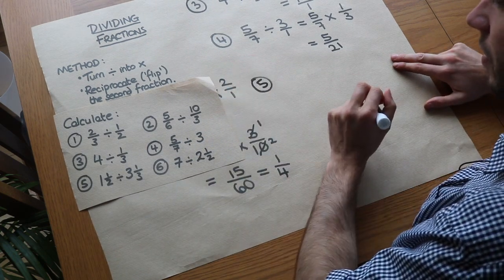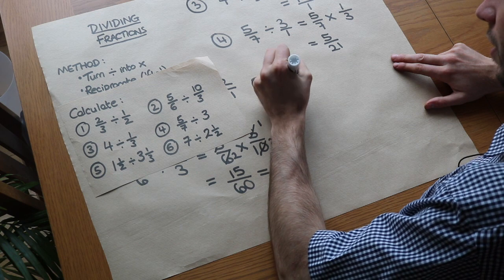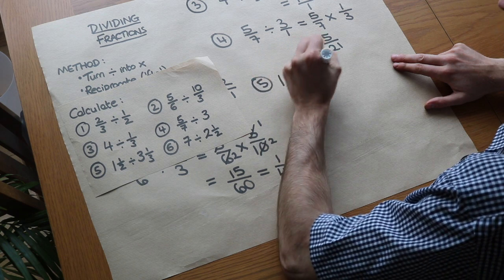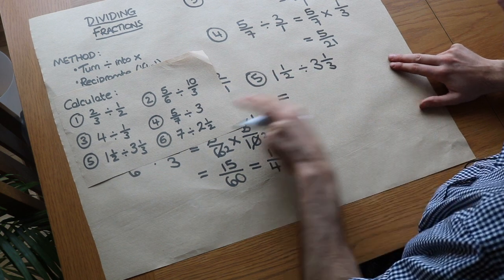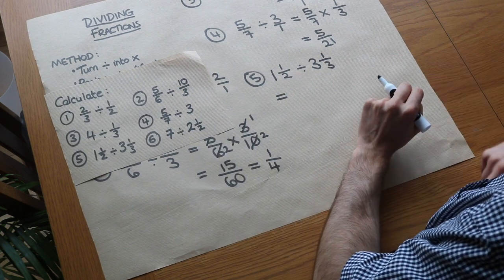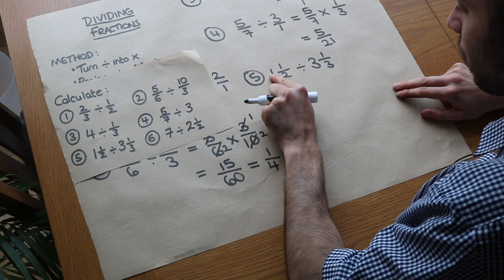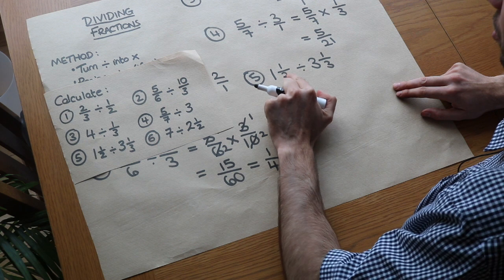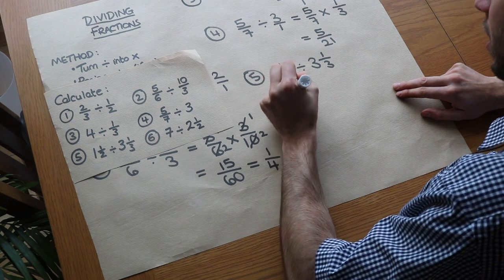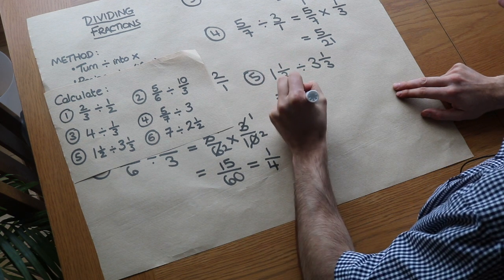Question 5. We've got 1 and 1/2 divided by 3 and 1/3. Now we've got mixed numbers this time, so the way to do this is just to convert the mixed numbers into improper fractions first. You may remember that you just do 1 times 2 plus 1 to get the numerator. So 1 times 2 is 2, plus 1 is 3, so it's 3/2, and you keep the bottom number as it is.